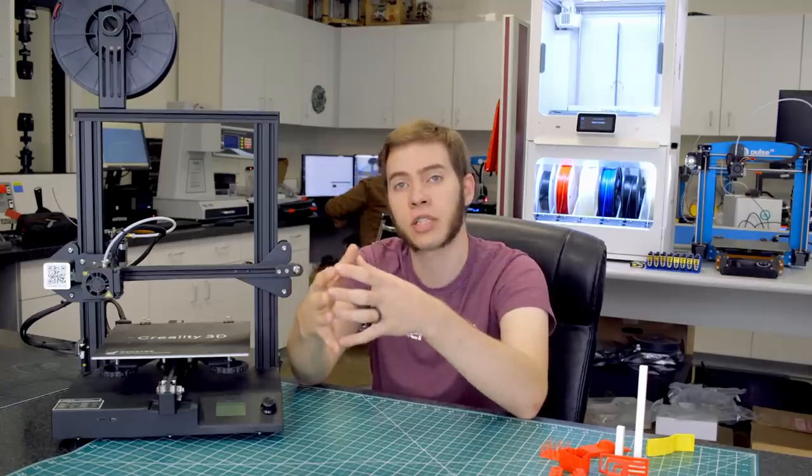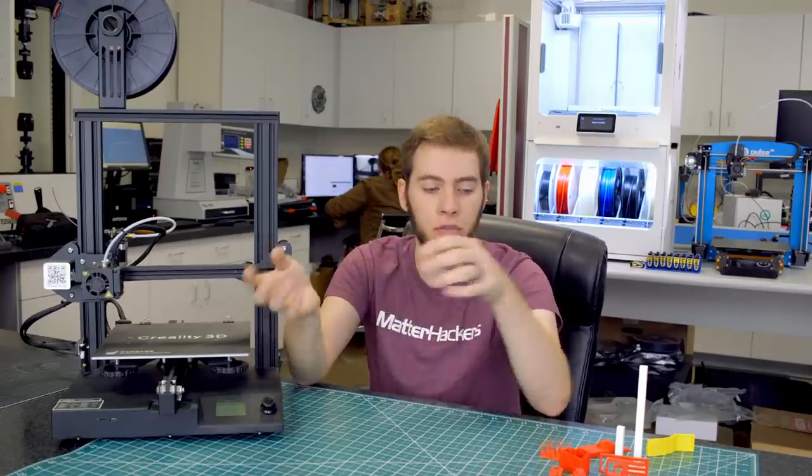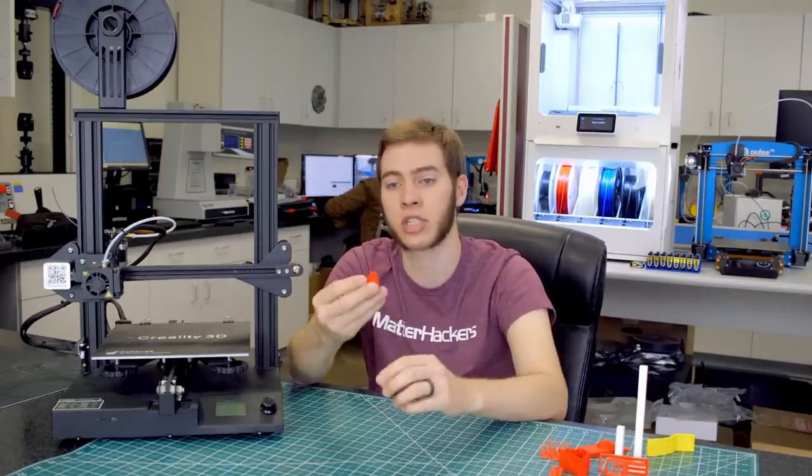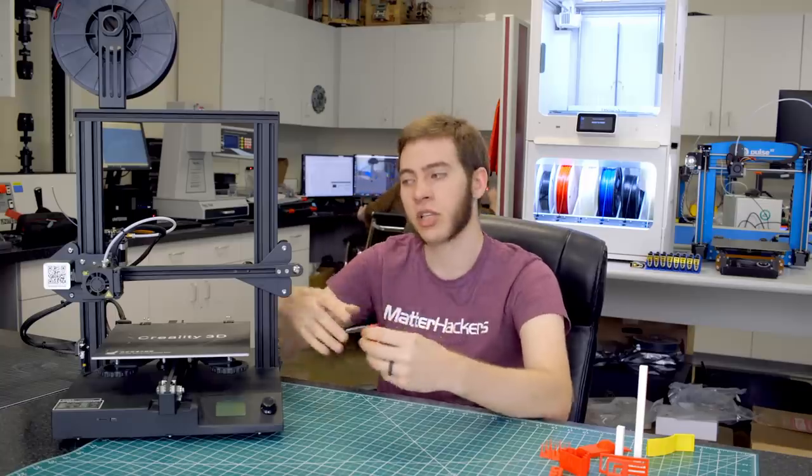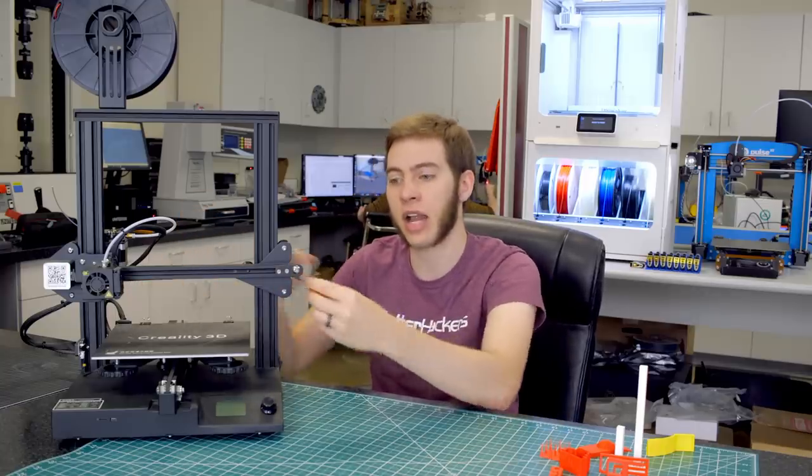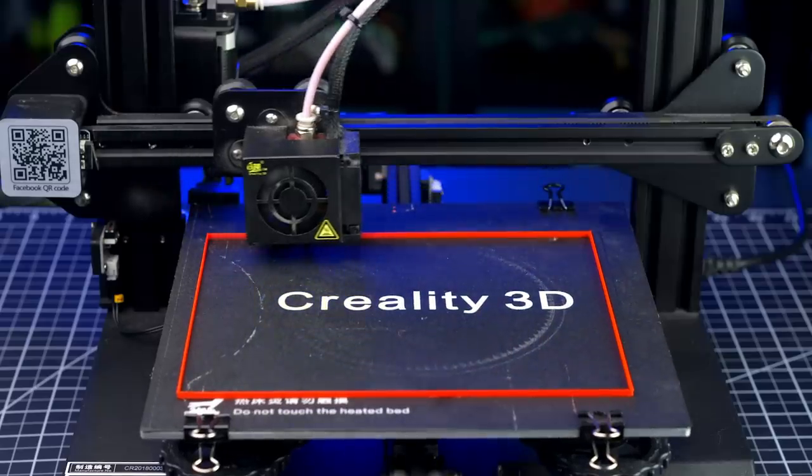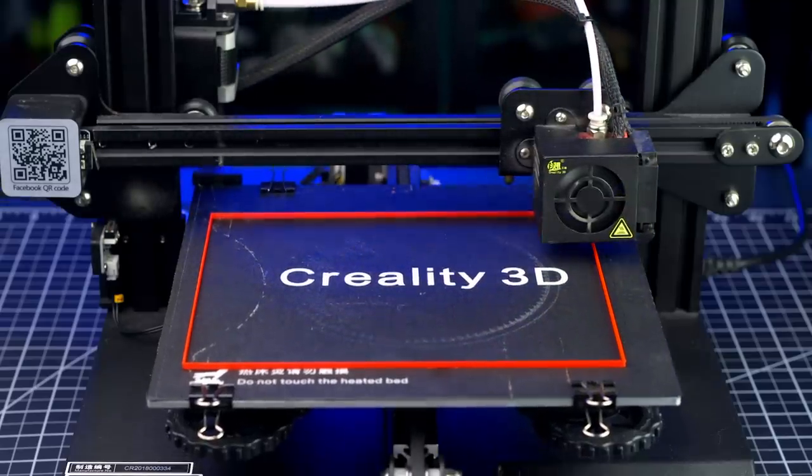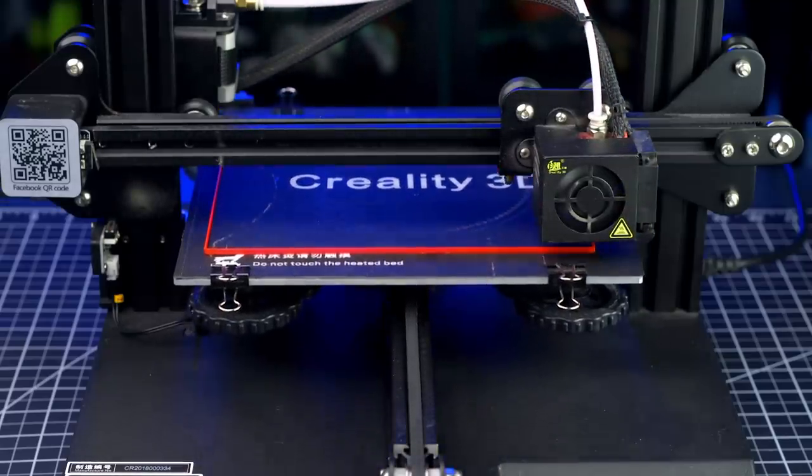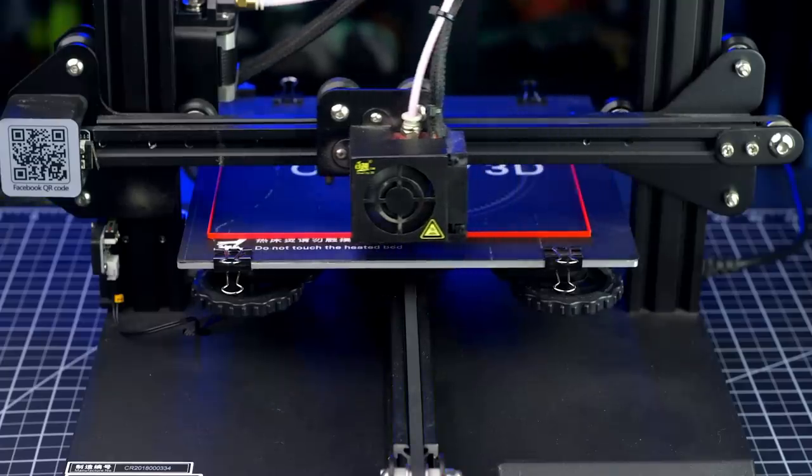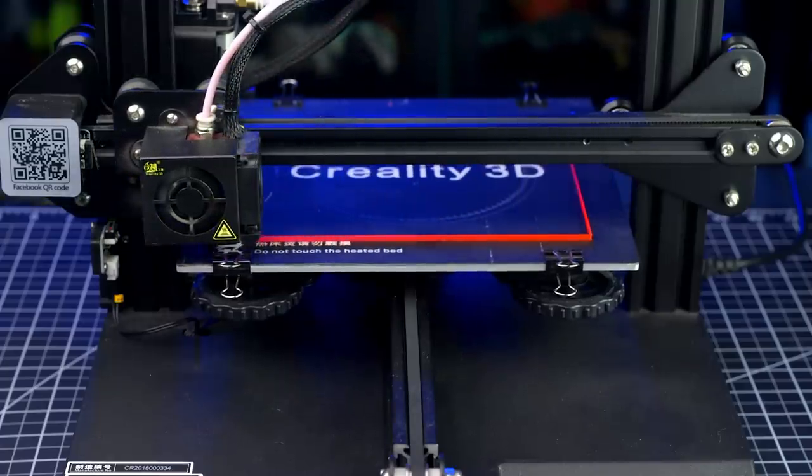The full bed dimensional accuracy test is basically an expanded version of the dimensional accuracy test. Where this is a small one this one tests the full bed size to see if any discrepancy here it gets expanded if you make the print bigger because if you're trying to print a really large print that's multi parts to make one big assembly you need all the parts to fit together no matter how big they are or where they are on the bed.